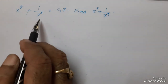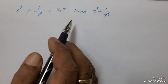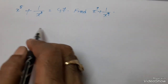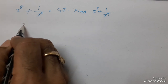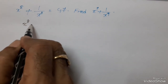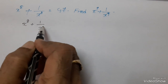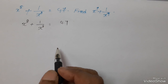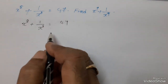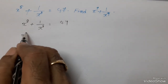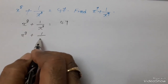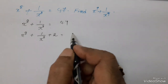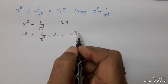Given x power 8 plus 1 by x power 8 equal to 47, find x power 9 plus 1 by x power 9. First, take x power 8 plus 1 by x power 8 equal to 47, and add 2 on both sides. So we get x power 8 plus 1 by x power 8 plus 2 equals 47 plus 2, which gives 49.